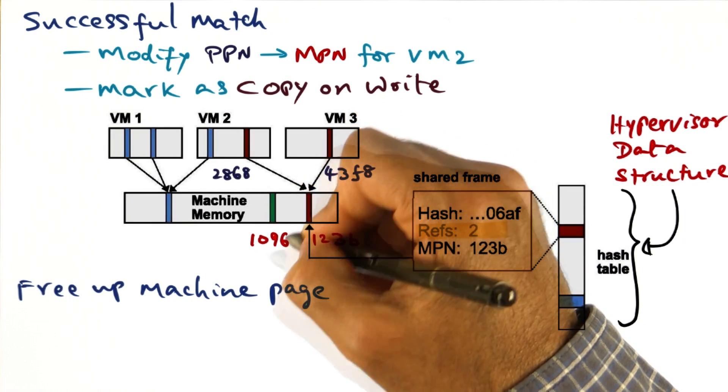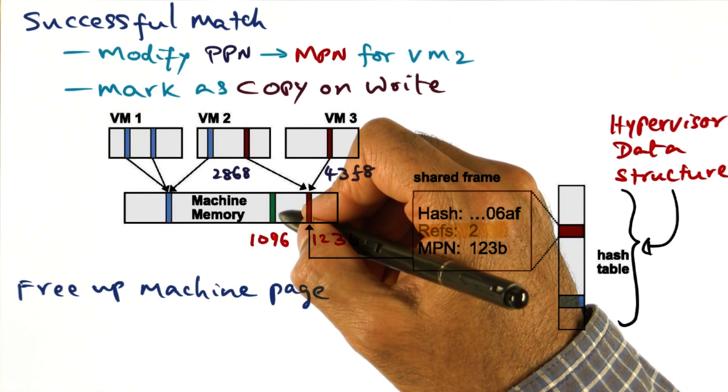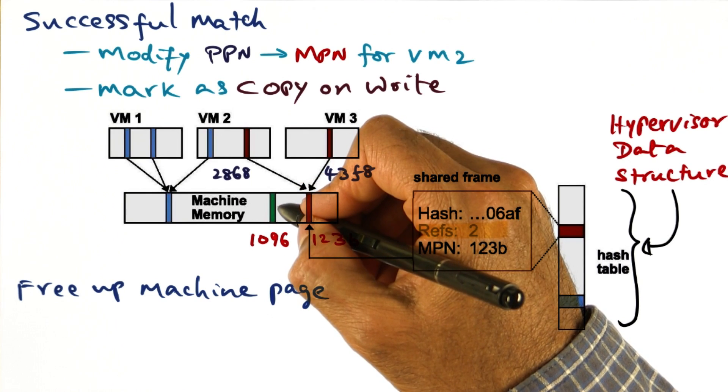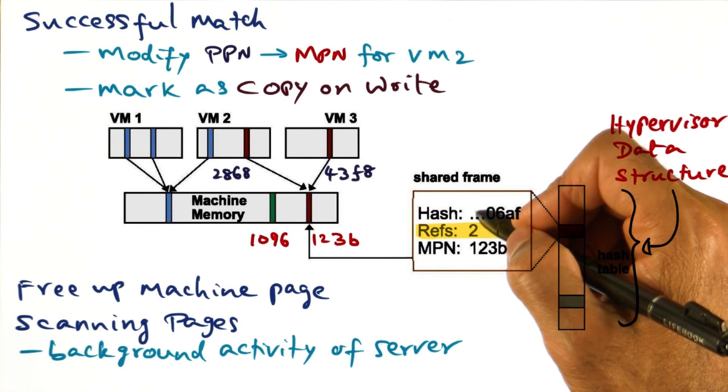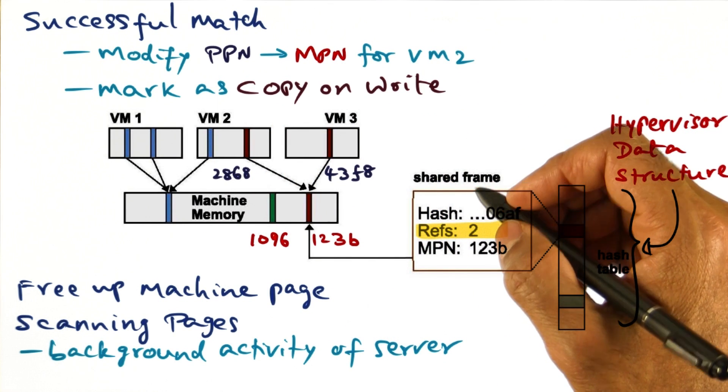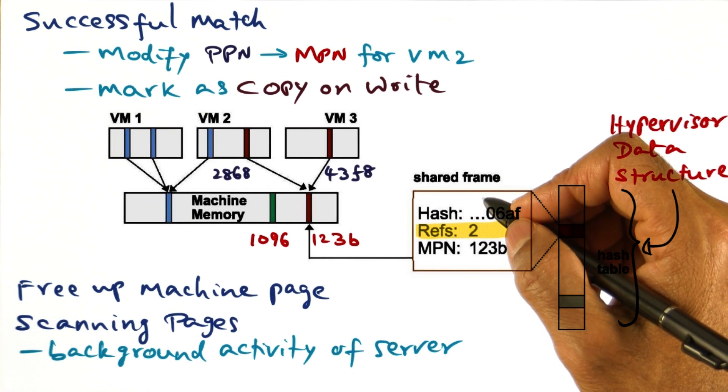And now we can free up page number 1096 so there is one more page frame that's available for the house in terms of allocation. Because all of these things that I mentioned just now are fairly labor intensive operations, you don't want to do this when there is active usage of the system.